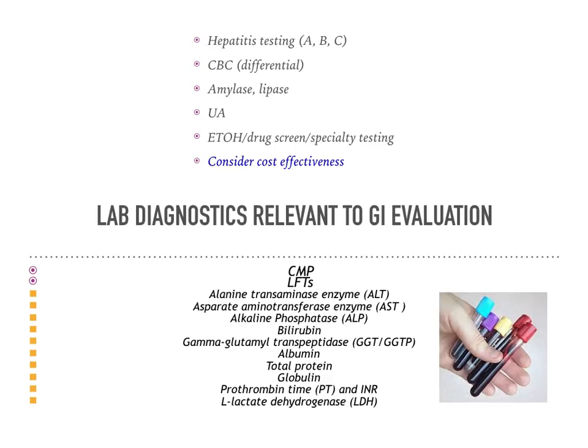Now that we've collected a good history and done a complete and thorough physical exam, we're going to move on to some of the laboratory and radiographic tests. For laboratory evaluation, key tests to evaluate issues within the abdomen include the complete metabolic profile. We can look at transaminases, both the ALT and the AST, as well as alkaline phosphatase and GGT to let us know if the liver is functioning properly.